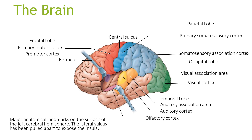Here is another diagram of the brain. You can see the frontal lobe, the parietal lobe, the temporal lobe, the olfactory cortex, and the auditory association area and the auditory cortex.